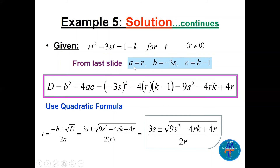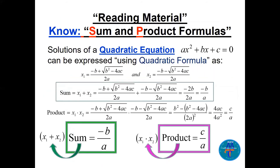Continuing: D equals 9s squared minus 4r times k minus 1. Distributing gives 9s squared minus 4rk plus 4r. Applying the quadratic formula to solve for t: since b is minus 3s, minus b becomes 3s. So t equals 3s plus or minus the square root of 9s squared minus 4r times k minus 1, all divided by 2r.